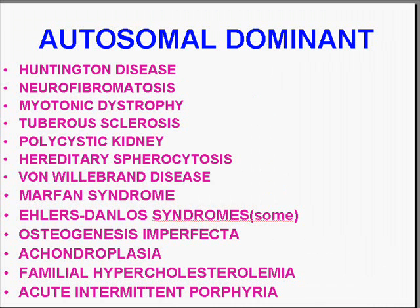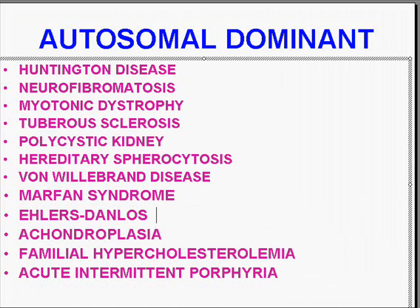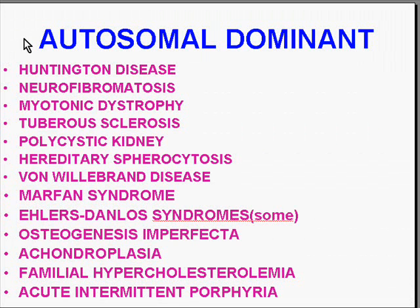We're not going to go into these diseases in any significant detail here — they will be dealt with in systemic pathology. However, it would be wise to know that diseases like Huntington's disease, neurofibromatosis, myotonic dystrophy, tuberous sclerosis, polycystic kidney disease, hereditary spherocytosis, von Willebrand's disease, Marfan syndrome, Ehlers-Danlos syndromes, osteogenesis imperfecta, achondroplasia, familial hypercholesterolemia, and acute intermittent porphyria are all autosomal dominant.